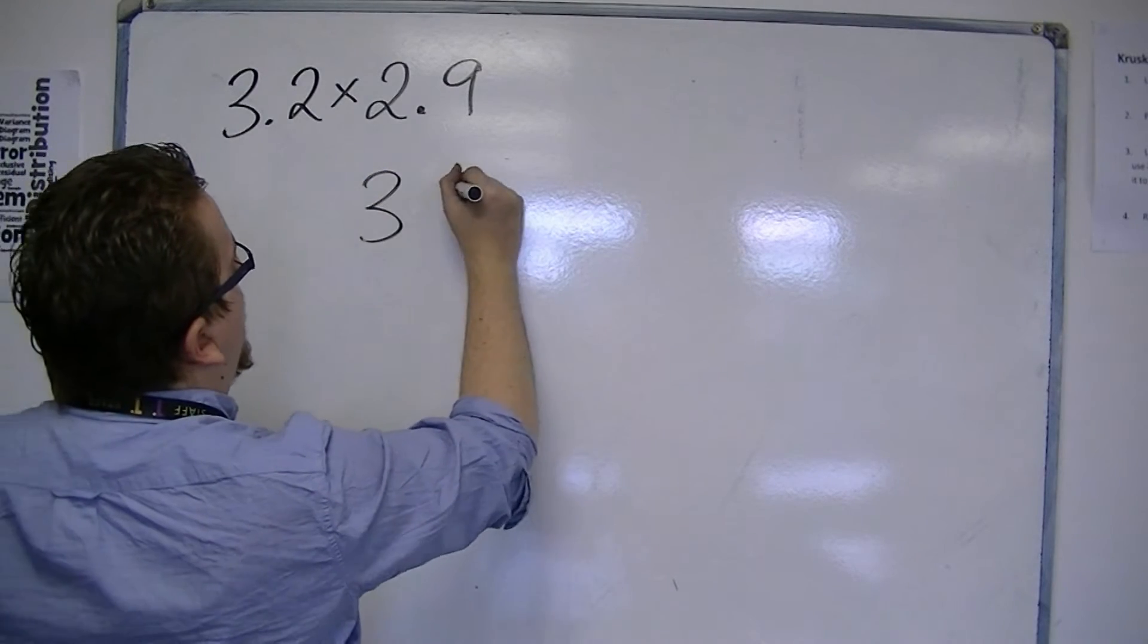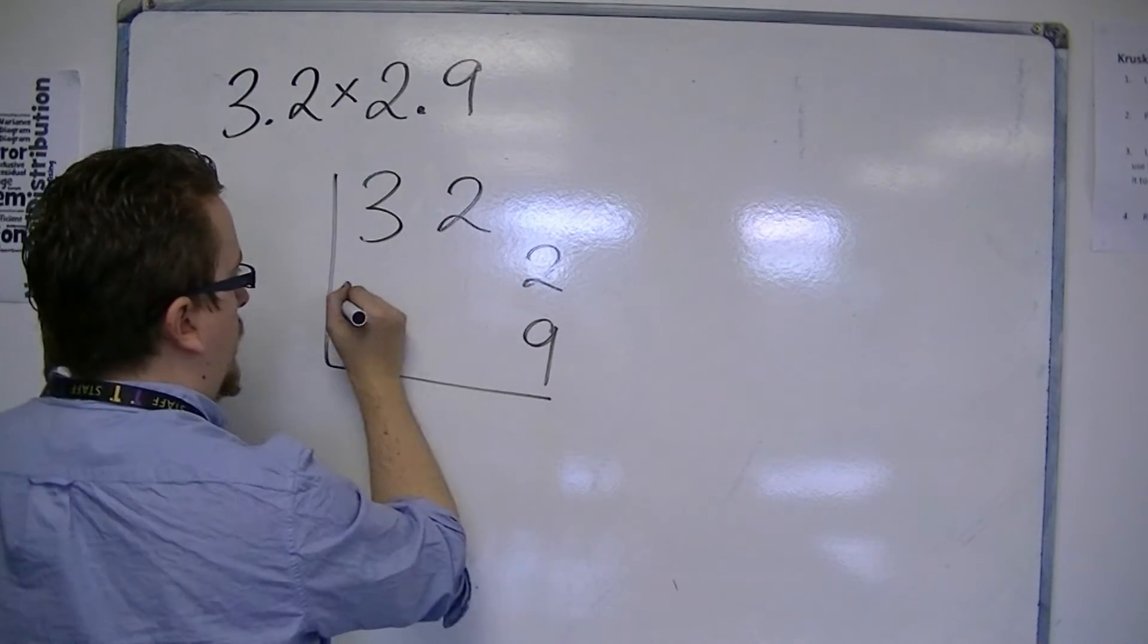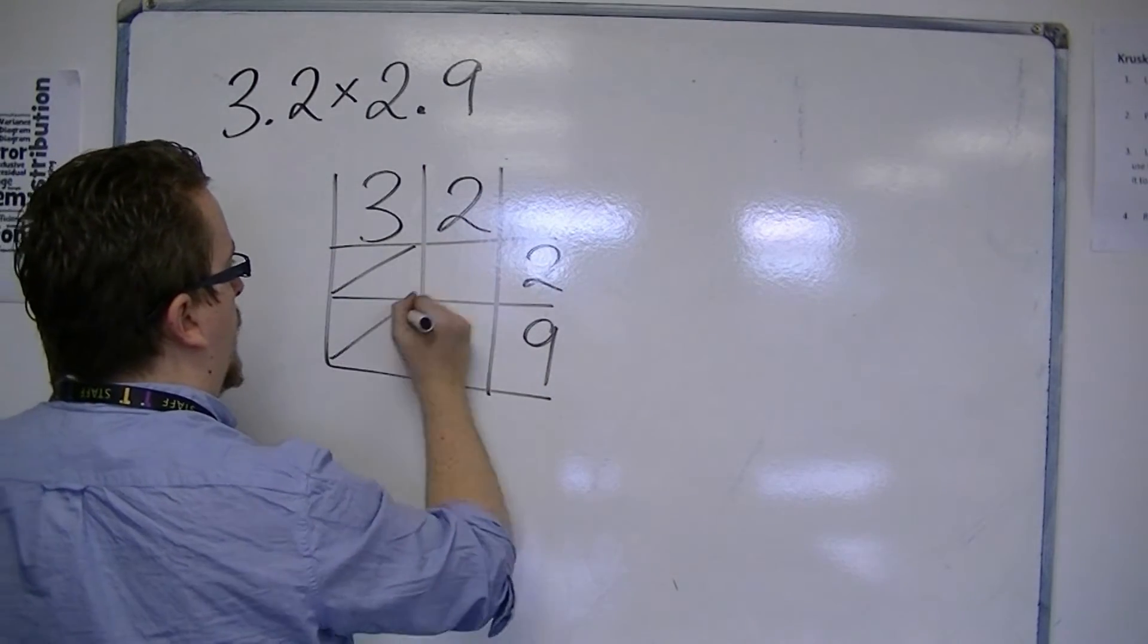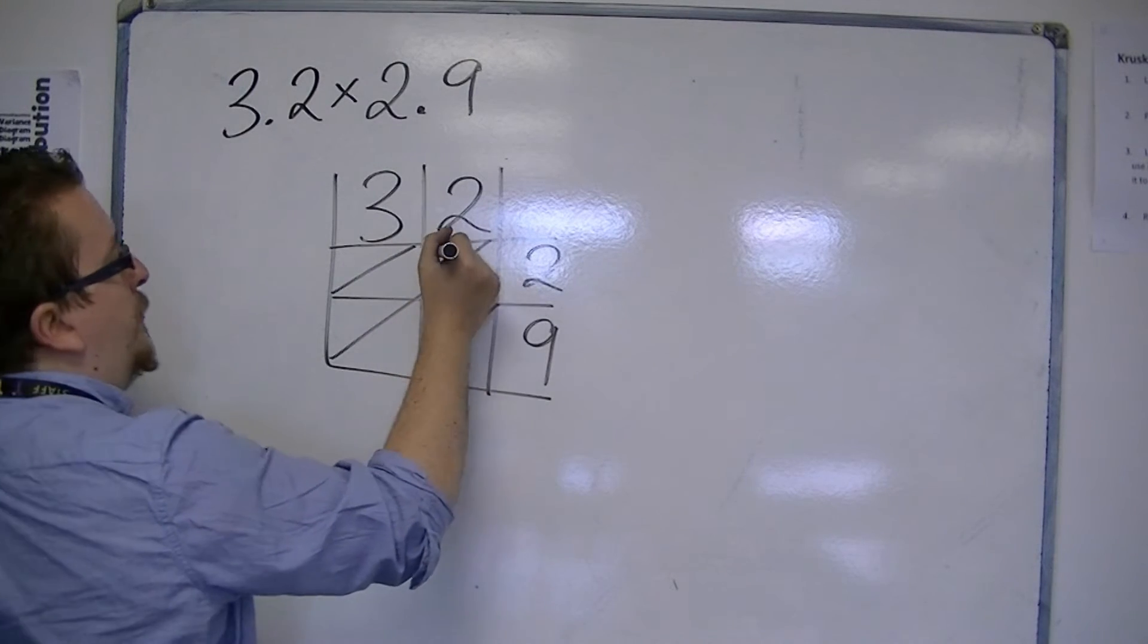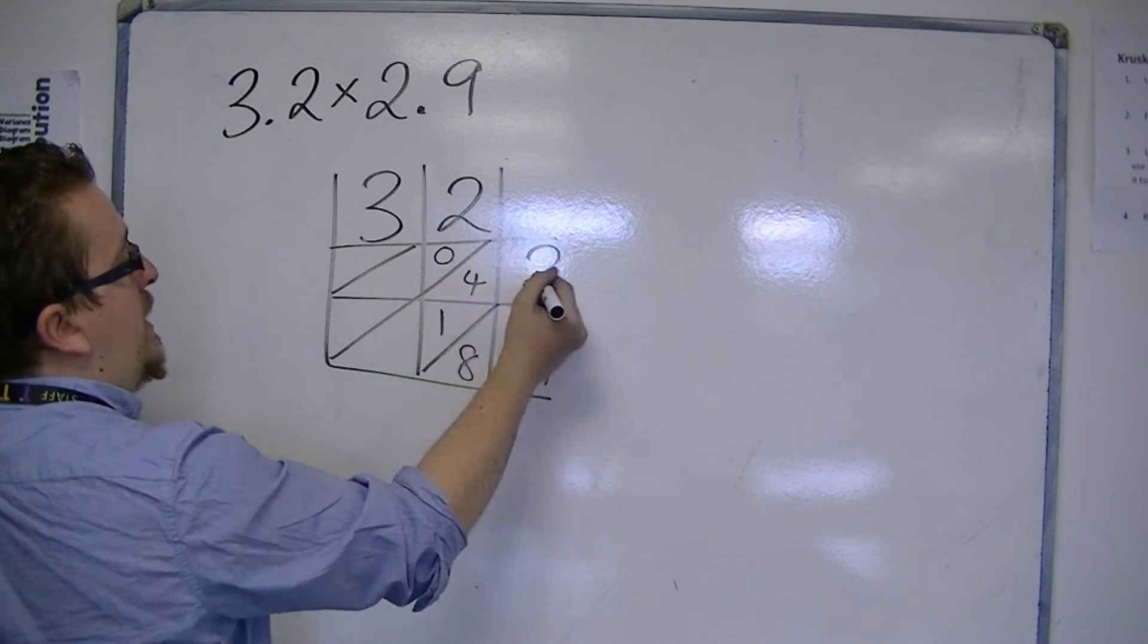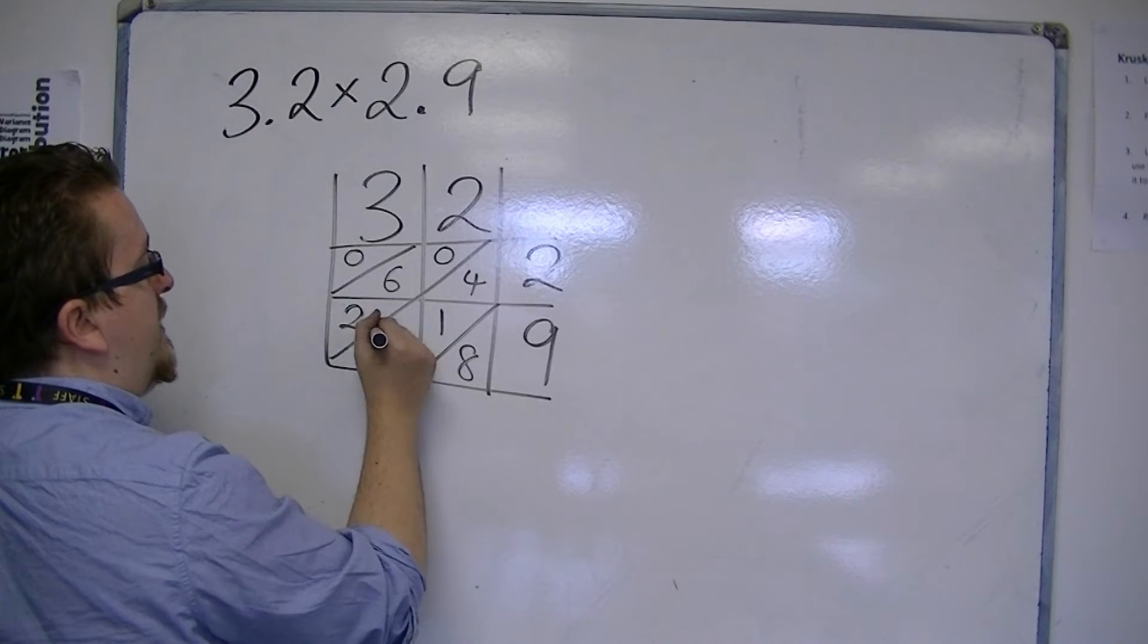So we write 32, 29. Draw our lattice. OK. So we've got 2 times 2 is 4, 2 times 9 is 18, 3 times 2 is 6, 3 times 9 is 27.